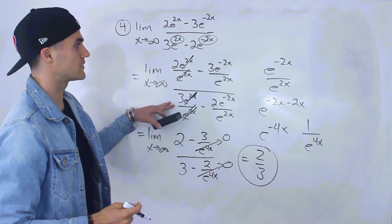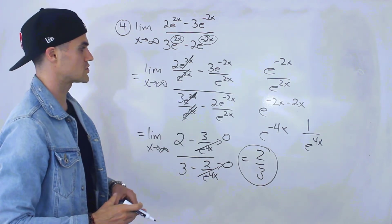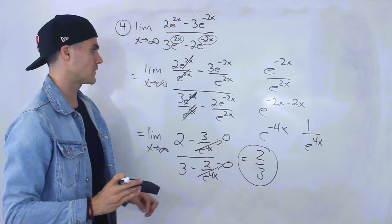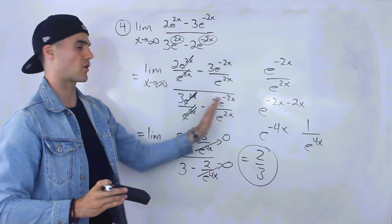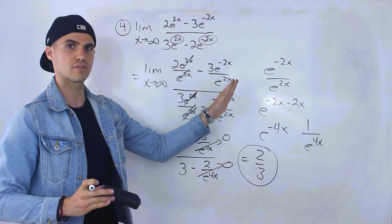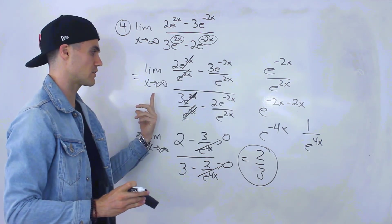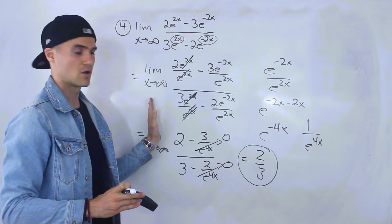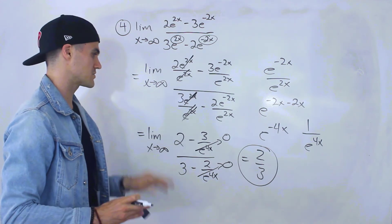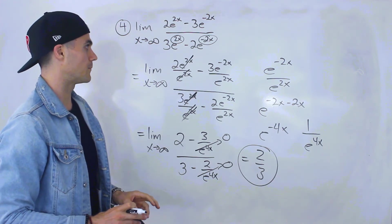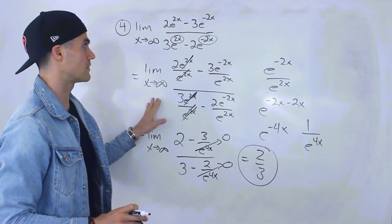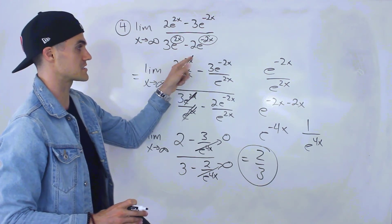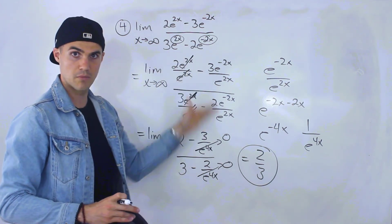I would recommend doing it this second way, as it shows your work more clearly. We're dividing by e to the highest exponent in the denominator, consistent with what we've been doing throughout. The final answer is 2 over 3.